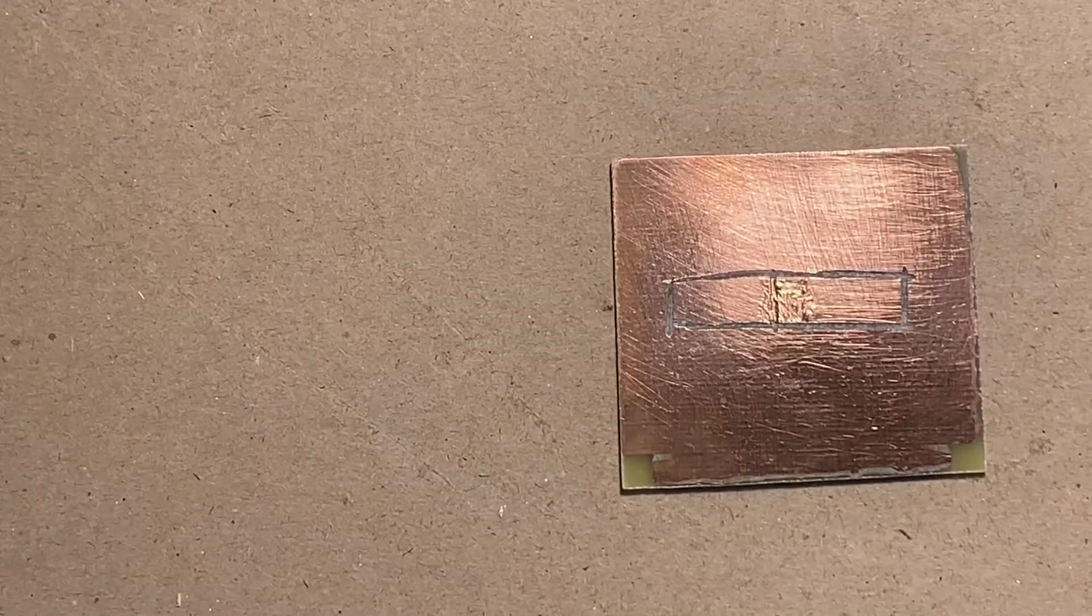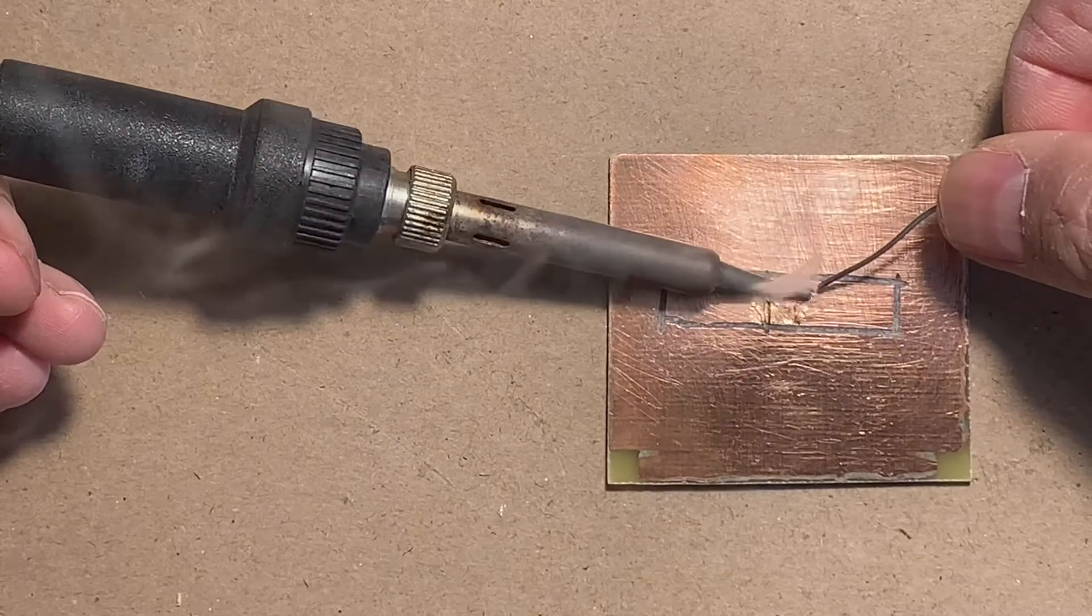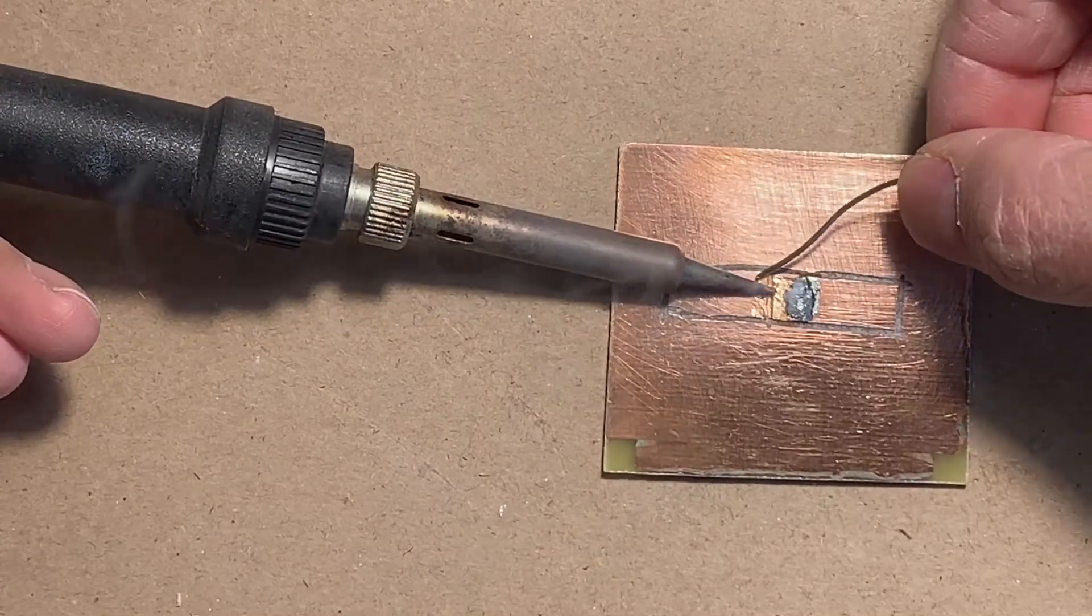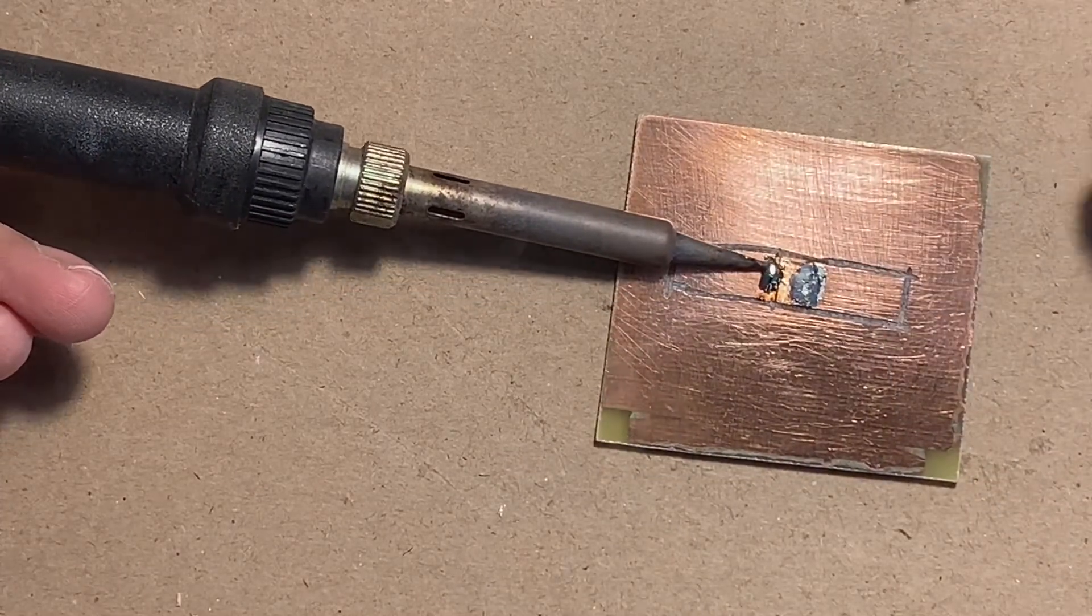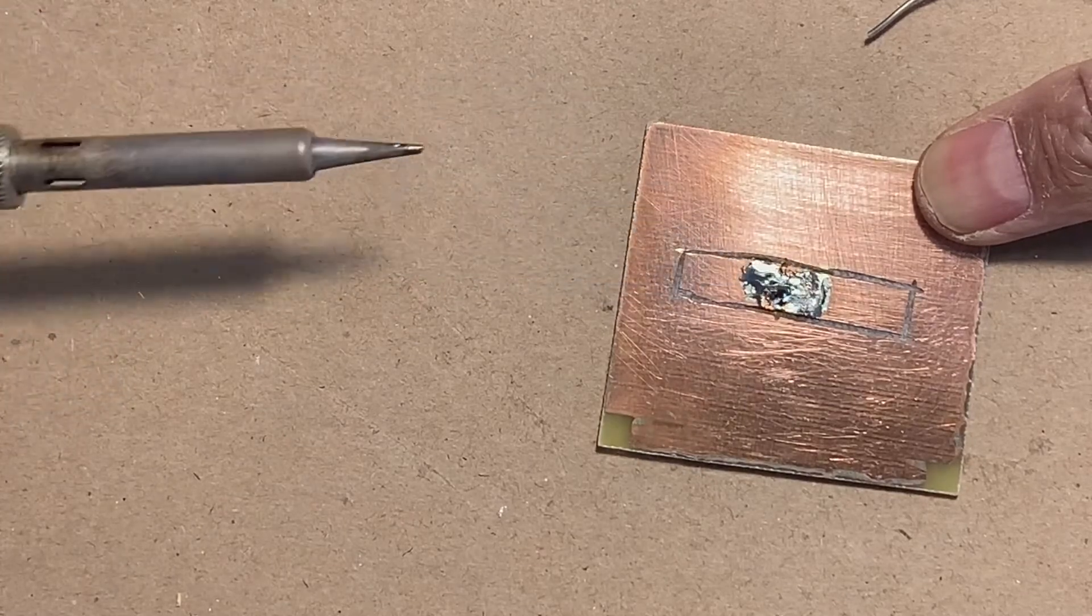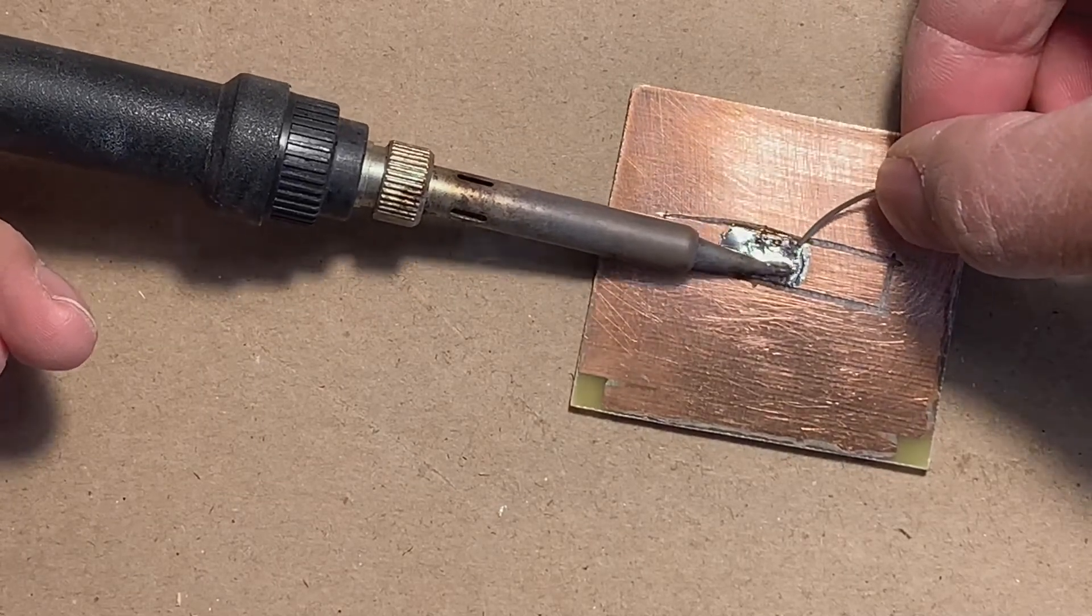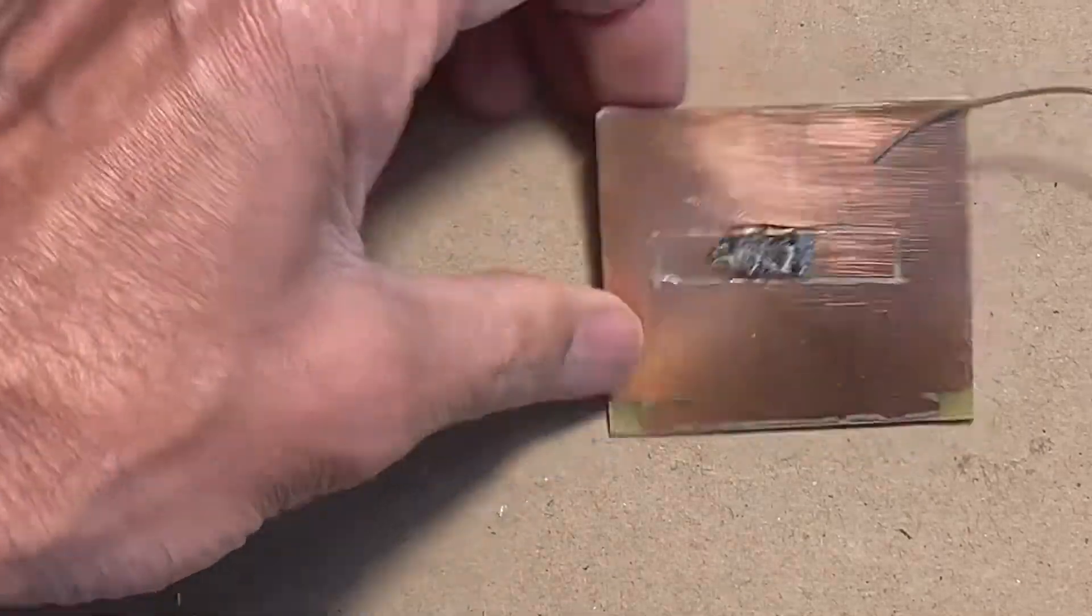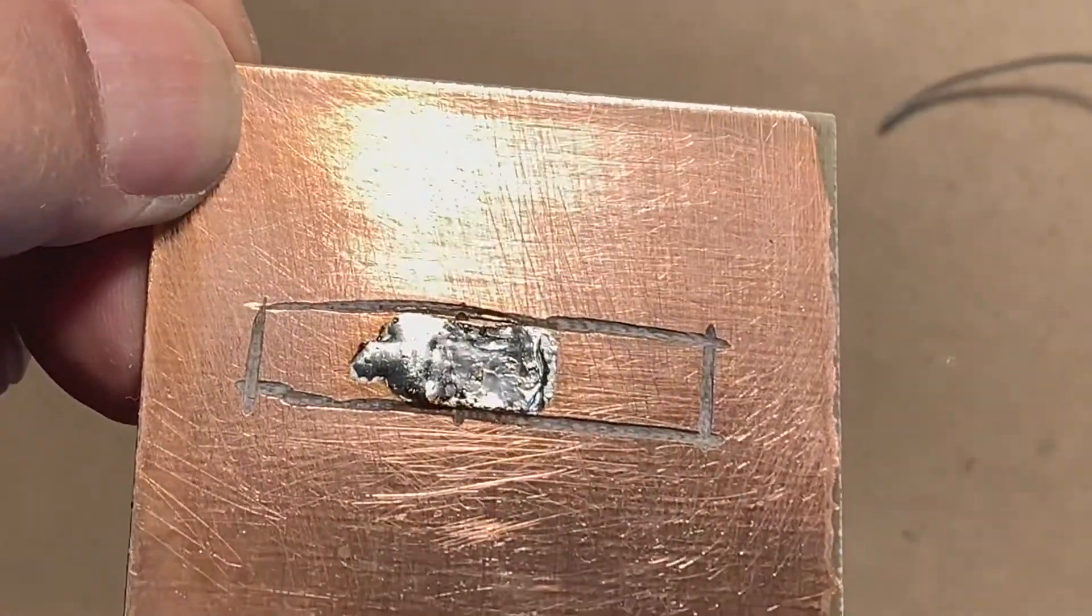Get your soldering iron ready and hot. Then just flow some solder over it to achieve the join. A little bit more. Let that cool down. There you are. A complete join across a broken trace.